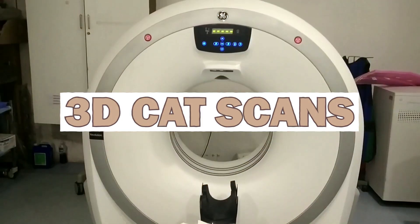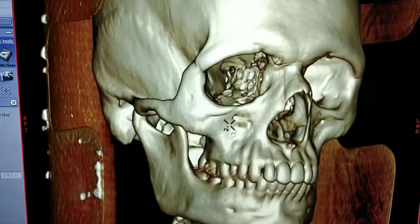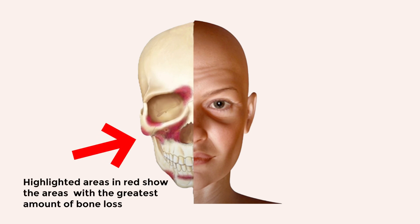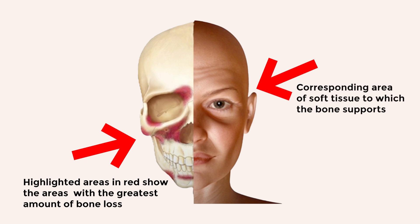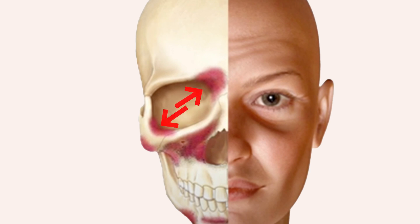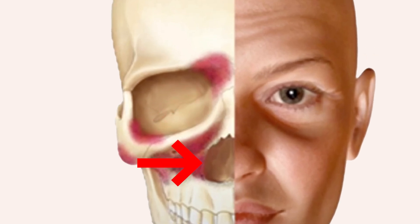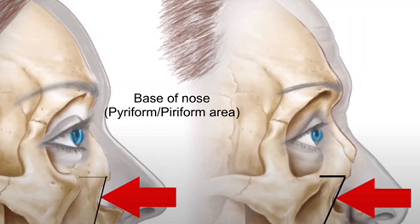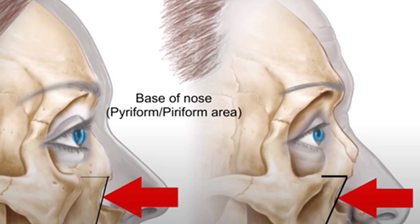Over the past decade, advanced 3D CAT scans have given us a better understanding of how bone loss occurs in our facial skeleton. We've discovered that this bone loss isn't uniform throughout our face — it occurs in specific areas. The red areas on this image indicate where the most bone loss occurs, and on the right you can see the corresponding soft tissues that support that bone. Bone loss mainly occurs around the eyes. Bone loss in the upper jaw area results in deeper nasolabial folds — those love lines — and also means less support for your upper lip. The area at the base of your nose, the piriform area, also recedes and deepens with age.